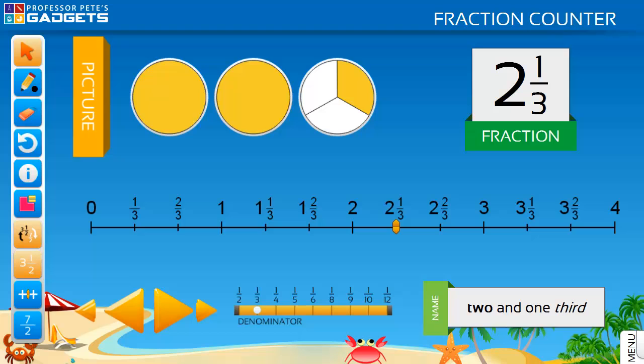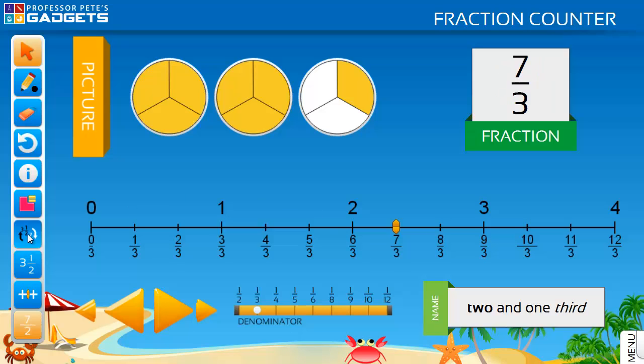The number line is a powerful teaching tool as it not only allows counting in mixed numbers, but can also show the corresponding improper fractions. The number line can show both, either or none of the fractions. Students can count in improper fractions using the mixed number to improper fraction tool to switch between them.